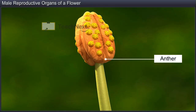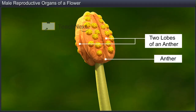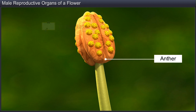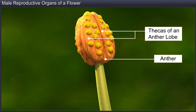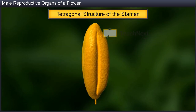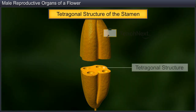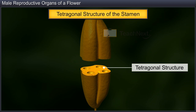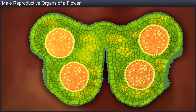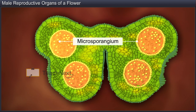The anther, on the other hand, is bilobed in nature, with each lobe being dithecous or consisting of two thecas that are separated by a longitudinal groove that runs through the anther. The transverse section of the anther reveals that its lobes form a four-sided or a tetragonal structure. In the corner of each lobe is the microsporangium, a sac-like structure, which is nearly circular in outline.